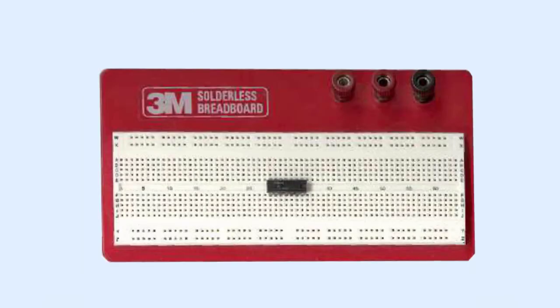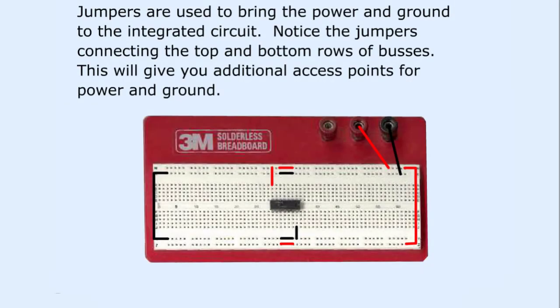Here, the dual inline package style chip is shown plugged into the breadboard. Jumpers are used to bring the power and ground to the integrated circuit. Notice the jumpers connecting the top and bottom rows of buses. This will give you additional access points for power and ground.